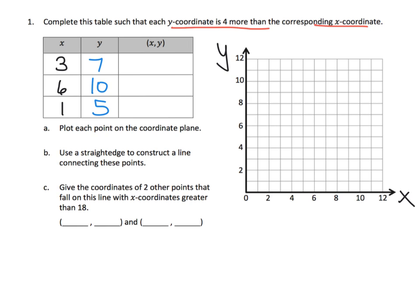Then it says the y-coordinate is 4 more than the x-coordinate. So that means our y-coordinate for 3 is 7. When the x-coordinate is 6, our y-coordinate is 10. And when our x-coordinate is 1, our y-coordinate is 5. Sure enough, the y-coordinate is always 4 more than the x-coordinate. Our points are 3, 7, 6, 10, and 1, 5. There's our points.